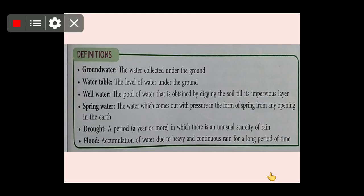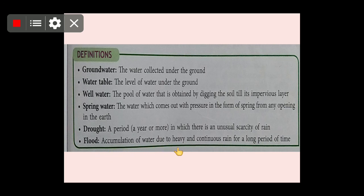Let us quickly revise a few important definitions. Groundwater is water collected under the ground, and the water table is its level. A well is a pool of water obtained by digging the soil till its impervious layer — through which water cannot pass. Spring water comes out with pressure from any opening in the earth. Drought is a period — a year or more — with unusual scarcity of rain. A flood is accumulation of water due to heavy and continuous rain over a long period of time.